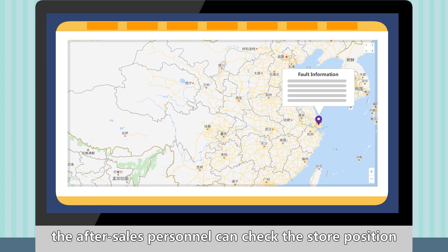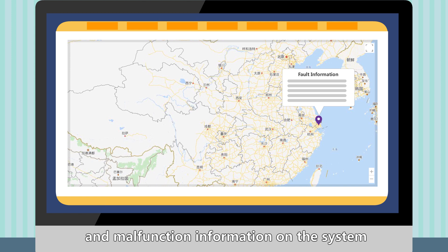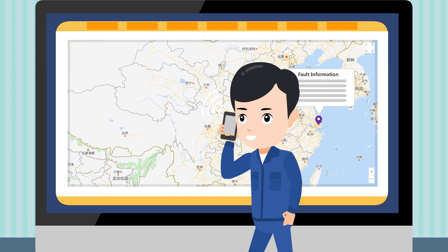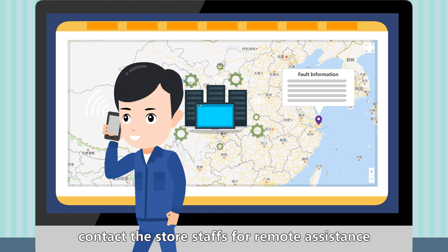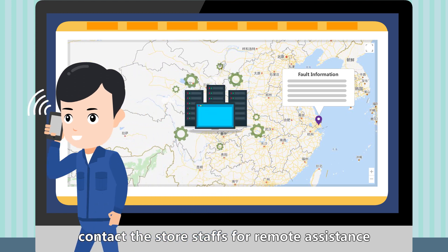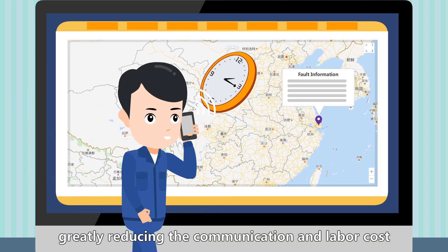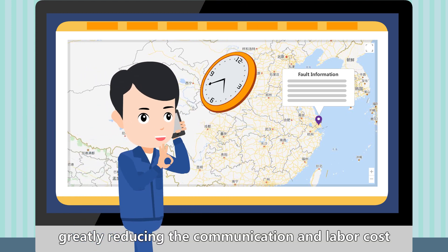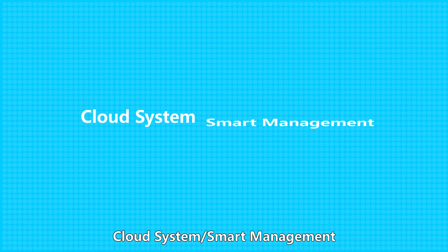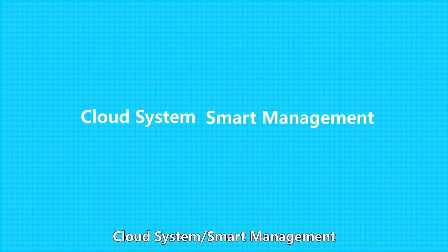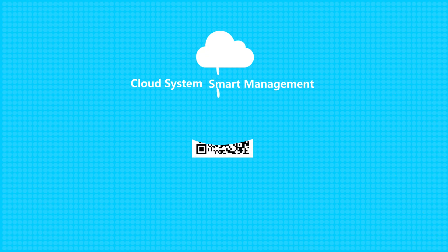Solution 3: Automatic malfunction surveys. After the dispenser in the store malfunctions, after-sales personnel can check the store position and malfunction information on the system, and contact store staff through remote assistance — greatly reducing communication and labor costs. Cloud System: Smart Management.